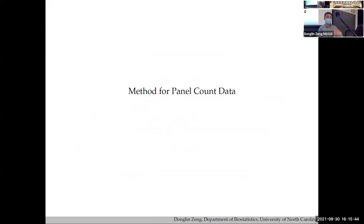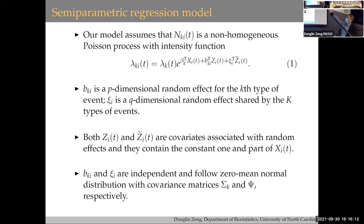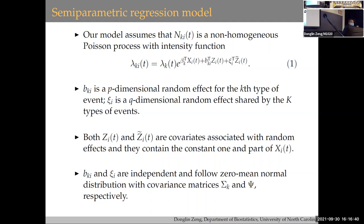Now I move to panel count data. For k types of recurrent events, you observe counts between consecutive monitoring times rather than exact event times. We assume a proportional intensity model, analogous to the proportional hazard model for recurrent events. We still introduce random effects: b_{ki} is a type-specific random effect for recurrent events of the same type, and ξ is a common random effect shared between different types of events. So there are two sets of random effects — one type-specific and one subject-specific shared across event types.